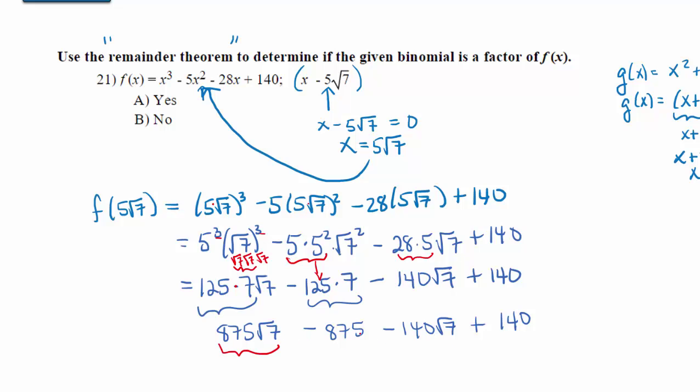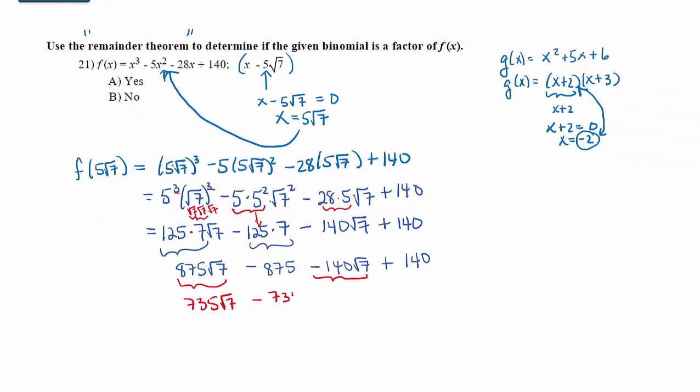125 times 7 is 875√7, minus 125 times 7 is 875, minus 140√7 plus 140. Now we're going to combine the like terms 875√7 and negative 140√7, which is going to give us 735√7, and we're going to combine negative 875 with 140, which is going to give us negative 735. Now,